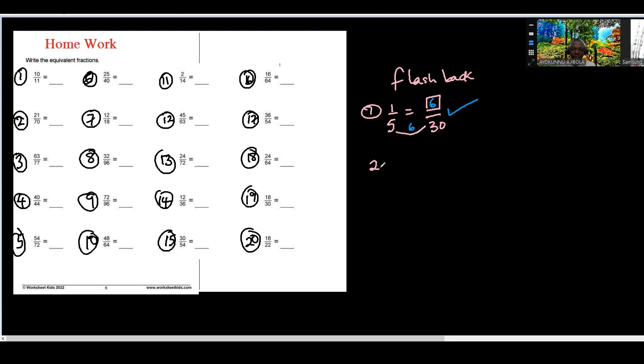And we also looked at other examples like when we have 2 over maybe 7 equal to something over 21. We observe, so 7 times what? We get 3, right? Then what do we do with the 3? Multiply by 2, and 3 times 2 equals 6. You remember this, right? Yes, sir.